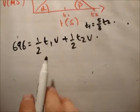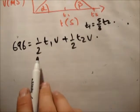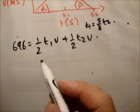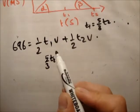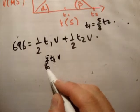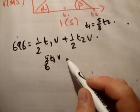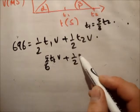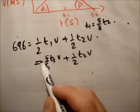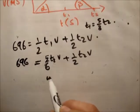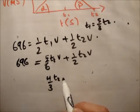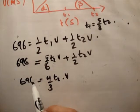So we have 696 is equal to half T1 times V plus half T2 times V. So we know that T1 is equal to 5 over 3 T2, so substituting: 696 equals half times 5 over 3 T2 times V plus half T2 times V. And that's equal to 696.